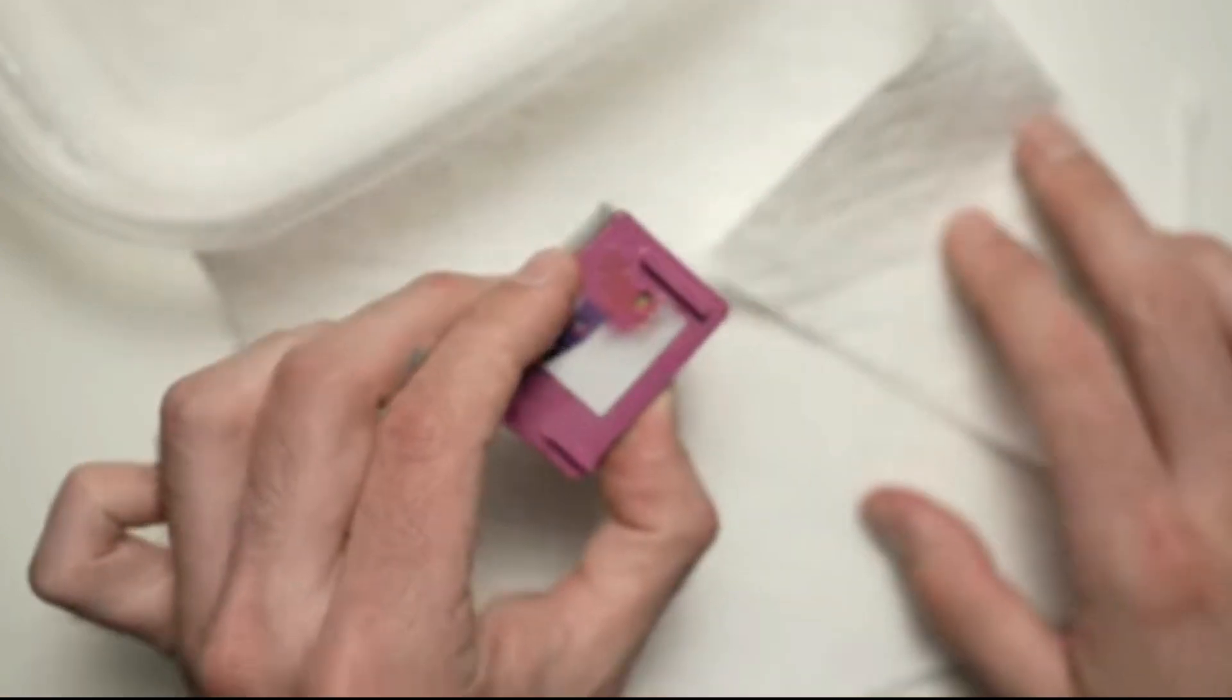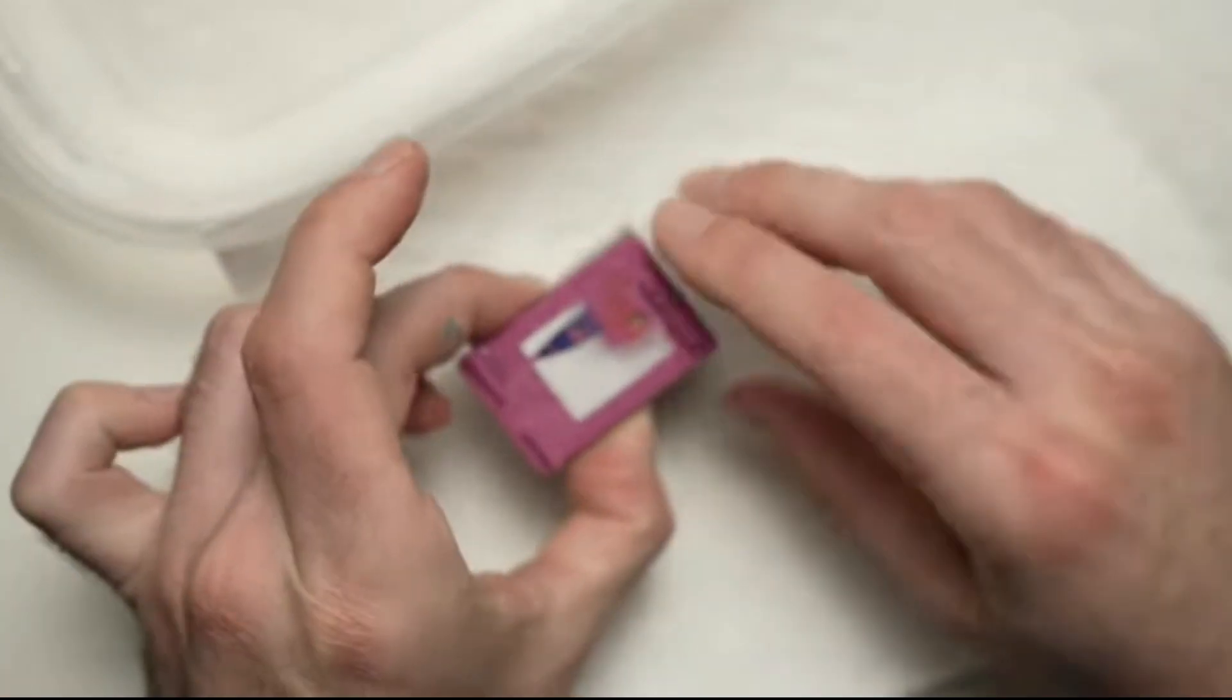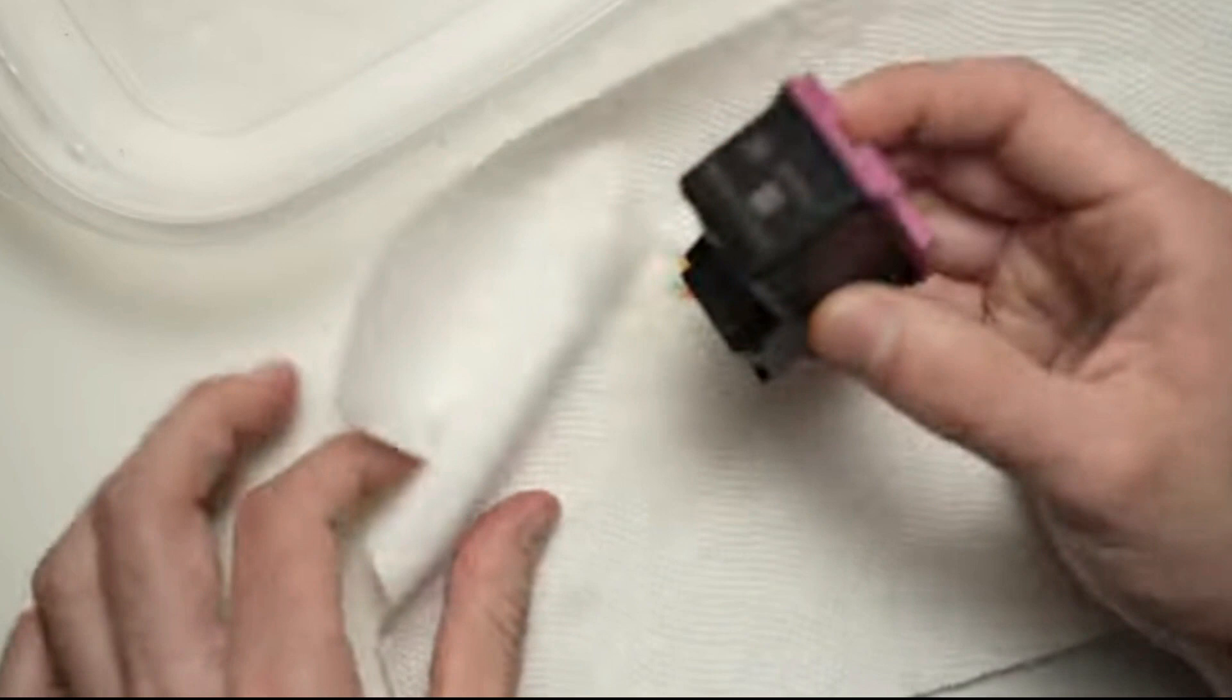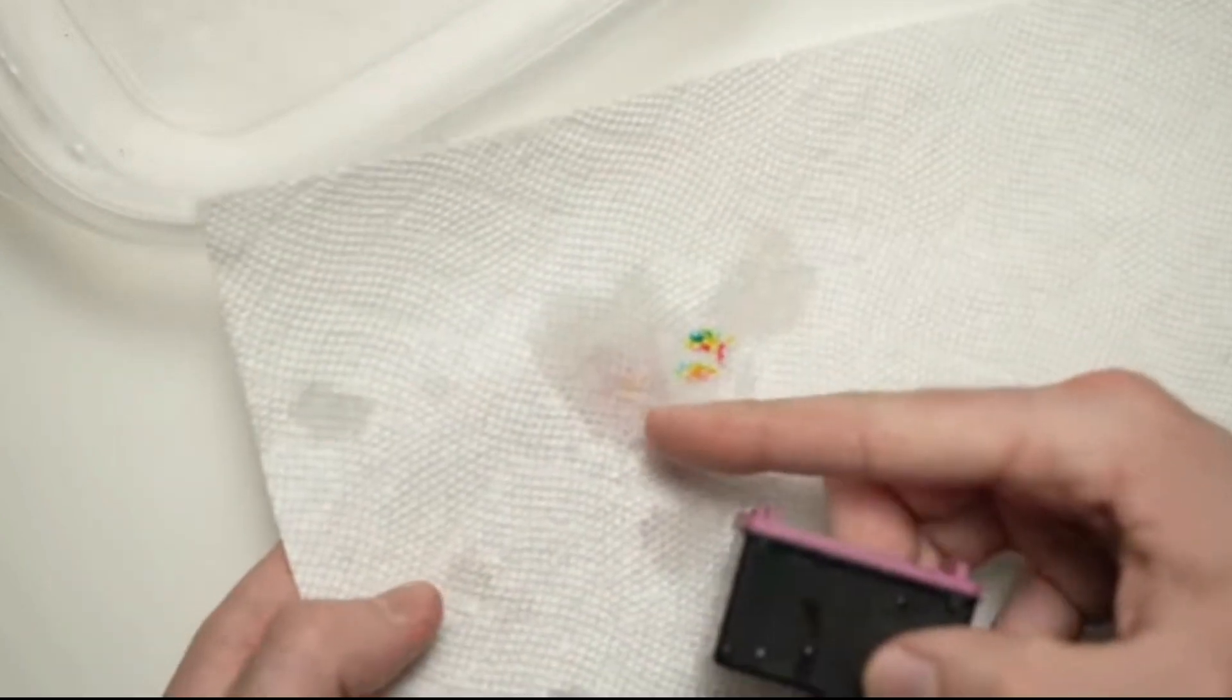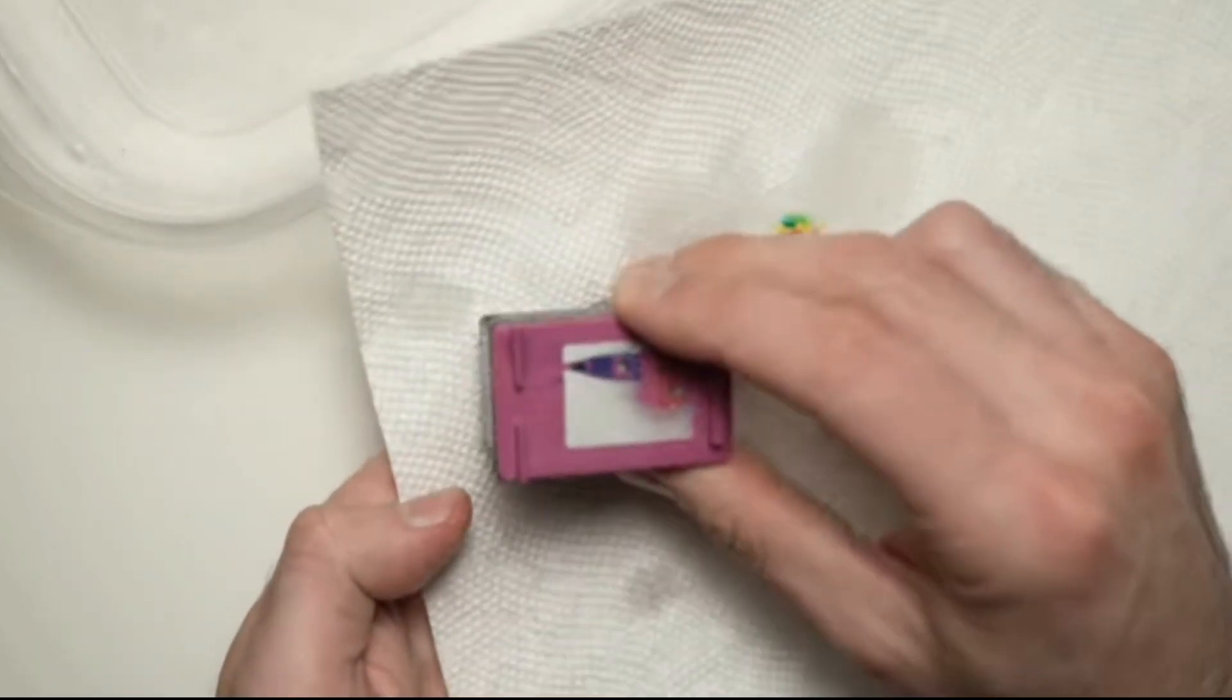Step 6: Reinsert the cleaned ink cartridge into the cradle and press down so it locks in place. Repeat the cleaning process with the other ink cartridge, if necessary.